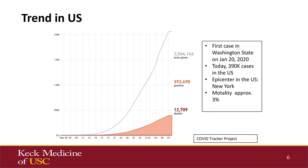Let's talk about trends in the United States. Thus far, we have tested about 2 million people, and our positivity rate is approximately 20%, with around 390,000 cases and a mortality of 3%. The first case was identified in Washington State in January. Today, we have around 390,000 cases in the United States; the epicenter is New York. These numbers are from yesterday and have gone up since then.